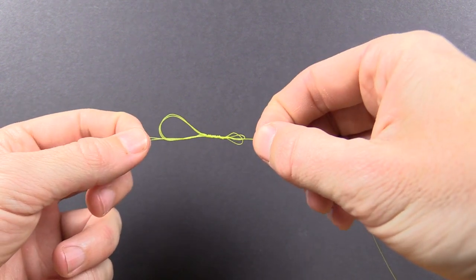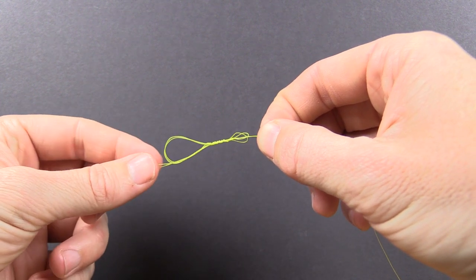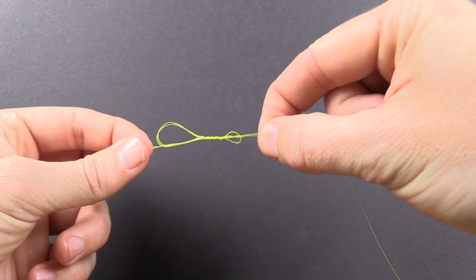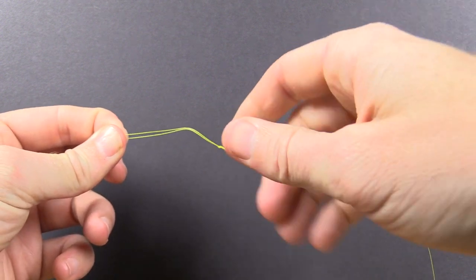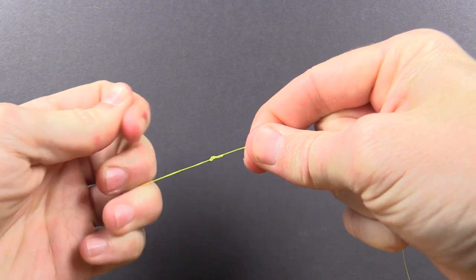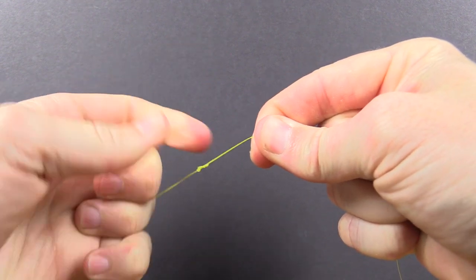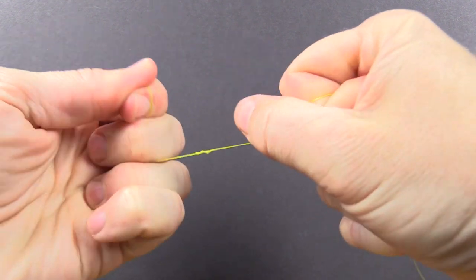And then what we do is just grab all four - grab the loop, the two lines in the loop, the tag end and the main line - and just go ahead and cinch it down. And just pull until it gets tight. Sometimes it kind of curves over like that, but as you pull tighter and tighter, it'll eventually smooth out.